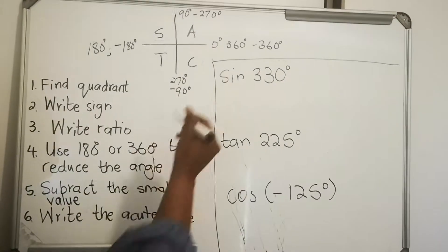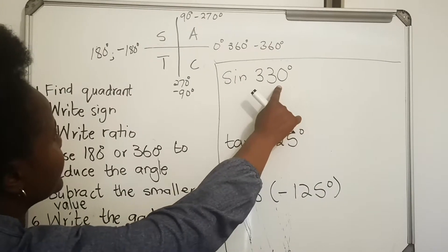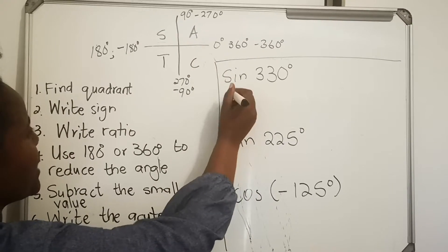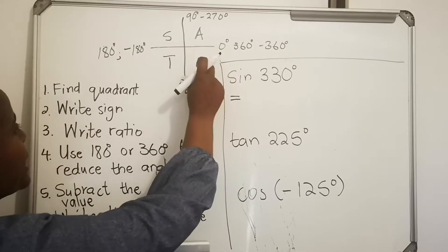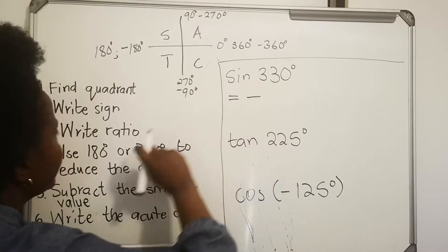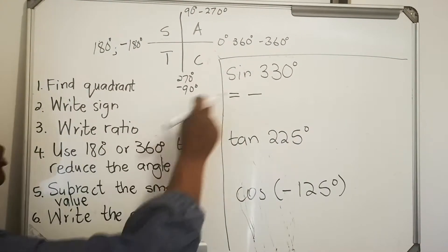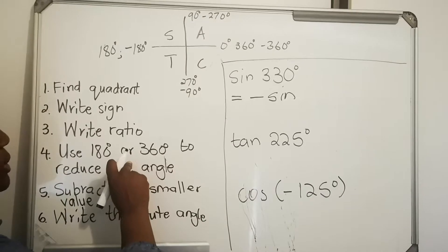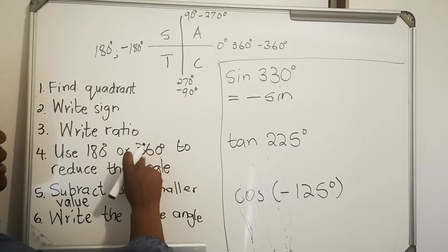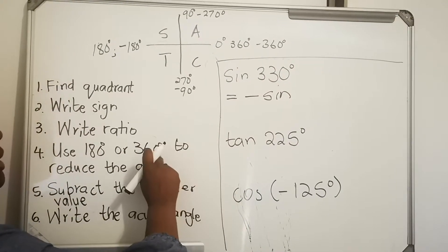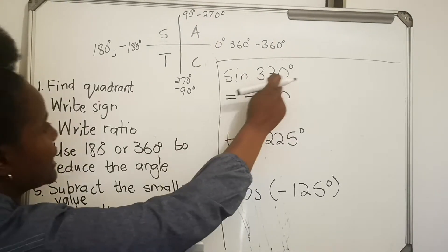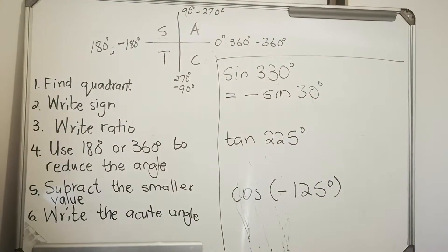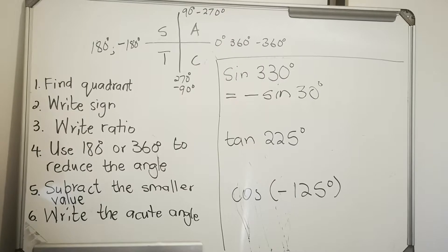First example: sin 330. Find the quadrant — 330 is between 270 and 360, so it's in the fourth quadrant. How is sine in the fourth quadrant? Only cos is positive, so sine is negative. Write negative, then write the ratio sine. Now find the angle: 360 is bigger, so 360 minus 330 equals 30 degrees. Your acute angle is 30 degrees — the angle has been reduced.